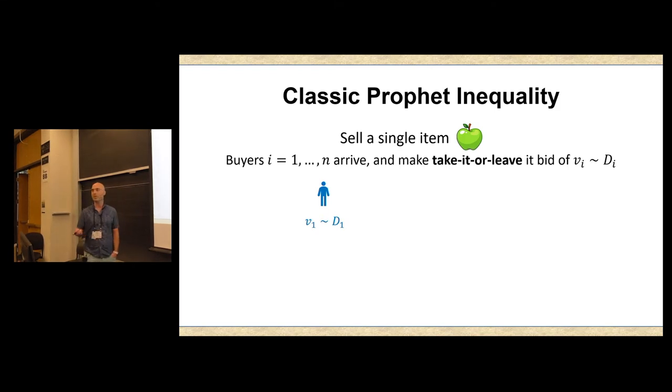So first buyer shows up, makes a bid. You decide, you know what, I'll wait for something better, hopefully, to show up. They leave the market. Another buyer shows up, makes their bid. You turn them down. A third buyer shows up. Maybe you sell them the apple. They're happy. You find out all the other bids. And unfortunately, you cannot accept them because you already sold your one single item.